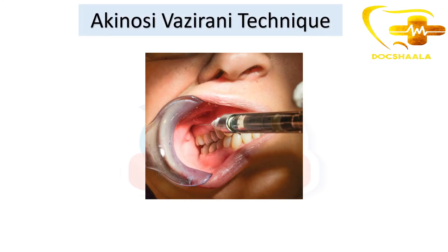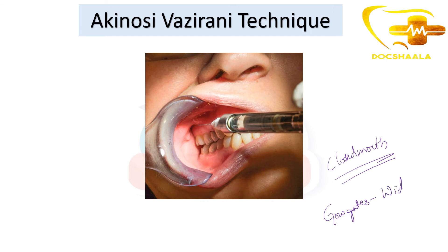The Akinosi-Vazirani technique is a closed mouth technique — the patient is asked to close his mouth and clench his teeth, and then the anesthesia is given. Whereas the Gow Gates technique requires a wide open mouth. That is the key difference between these two techniques.